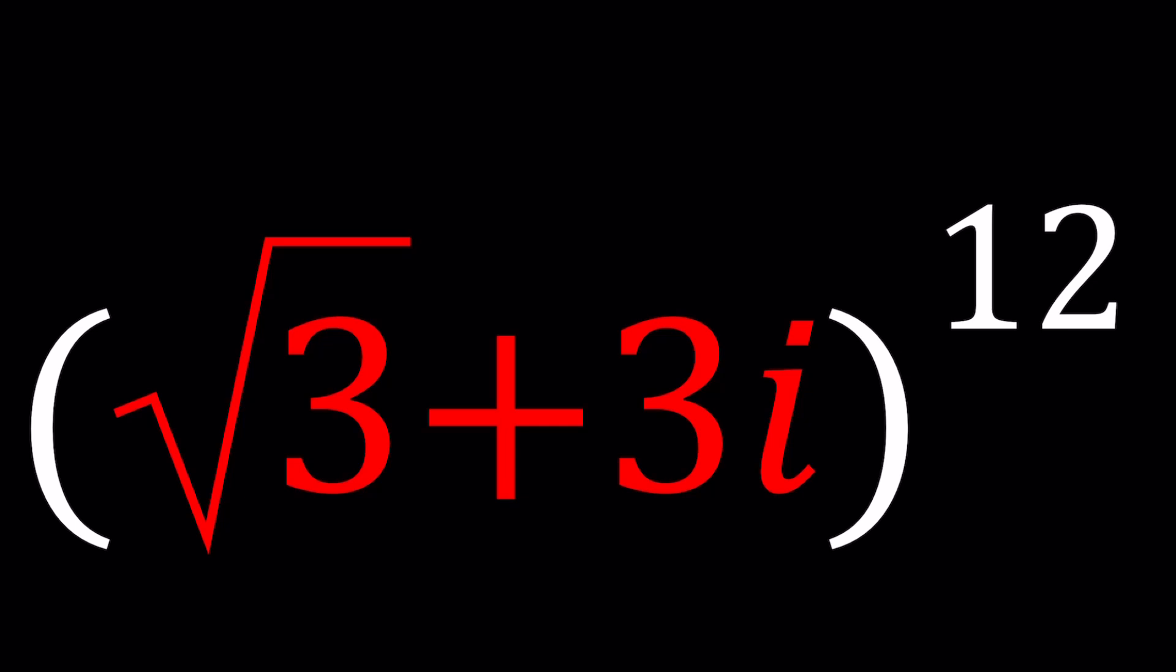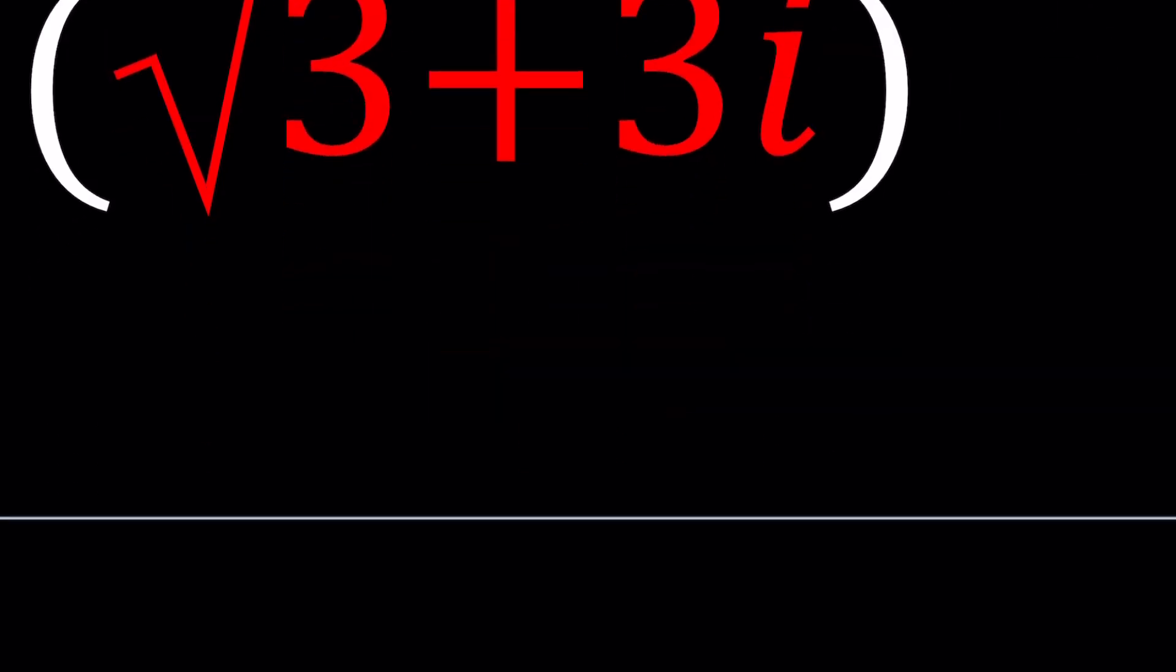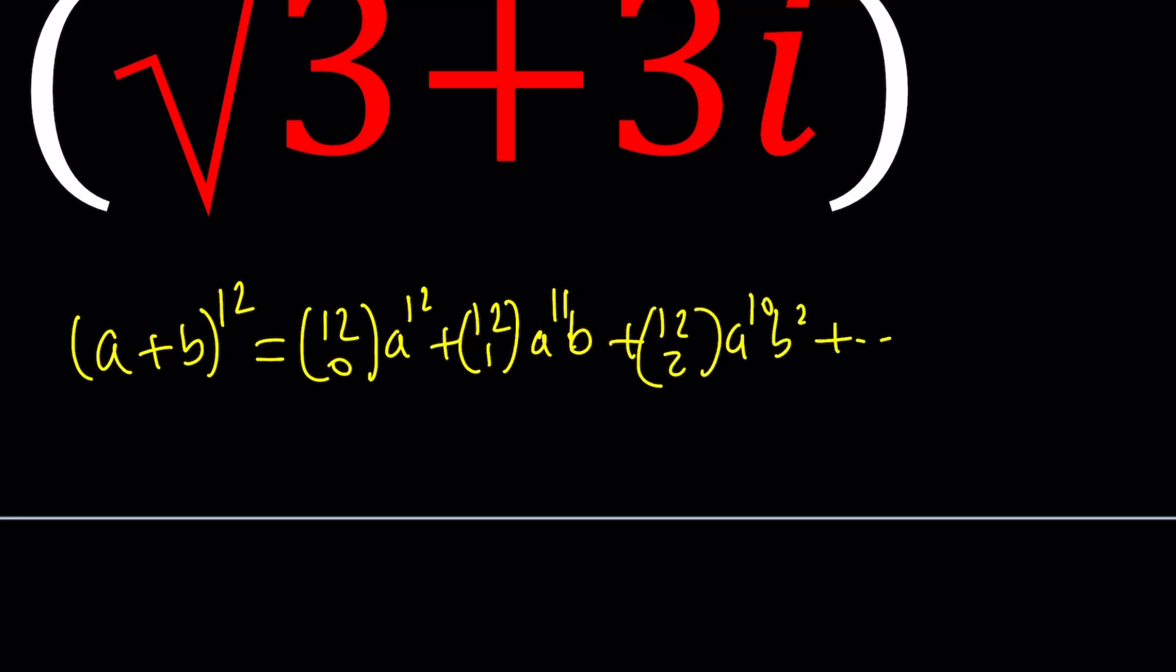Definitely, there's more than one way to do it, and the first method, which is the most brute force method, is using the binomial theorem. If you're raising A plus B to the twelfth power, you're going to end up with twelfth choose zero A to the power twelve, then twelfth choose one A to the eleven times B, then twelfth choose two A to the power ten B squared, and so on until B to the power twelve at the end.